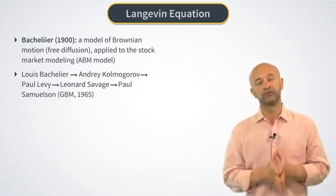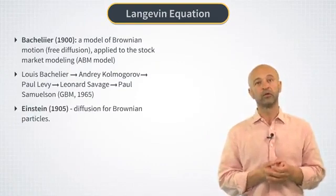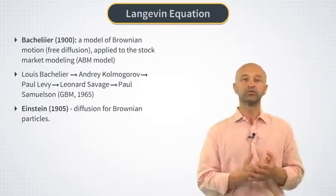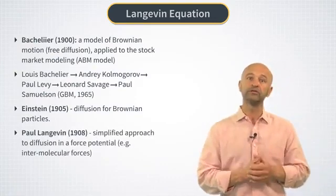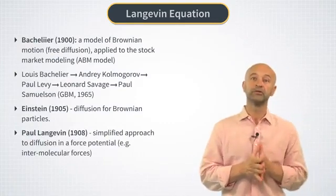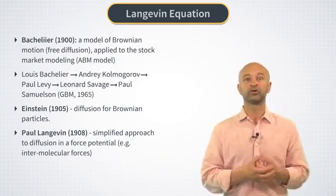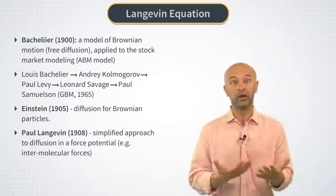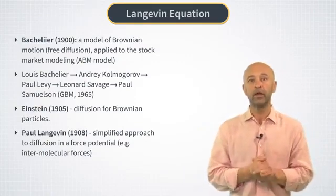About five years after Bachelier's work, Einstein published his work on the theory of the Brownian motion, and this work sparked lots of new research among physicists. The French physicist Paul Langevin studied a simplified model of Brownian motion for particles in an external field that produce force action on the Brownian particles.